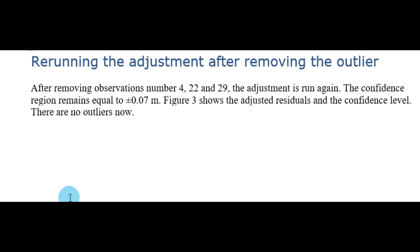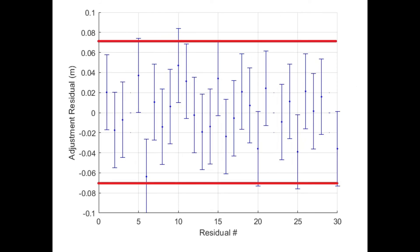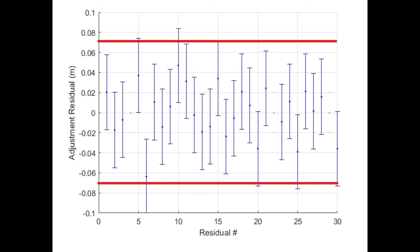We can now rerun the adjustment. We remove observations 4, 22, and 29 from the input and run again. Looking at the adjusted residuals, we have no information for observations 4, 22, and 29 — they have been removed. All remaining residuals now lie inside the confidence region; therefore, they are not outliers.